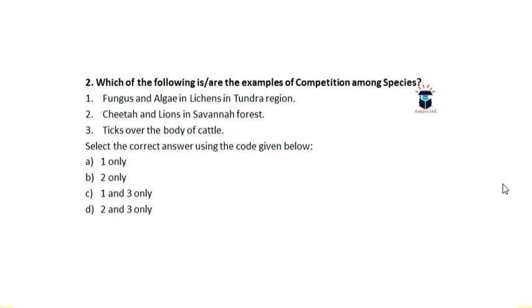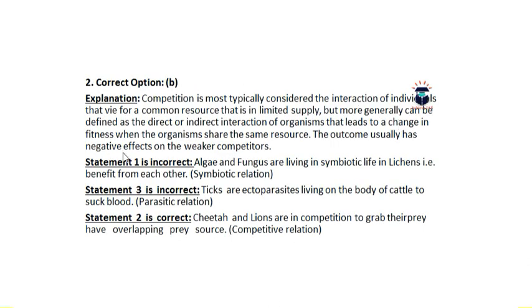The first statement is not correct because fungus and algae in lichens have a symbiotic relationship. The third option describes a parasitic relationship. Competition is the type of relationship in which two or more species compete with each other for common resources. Cheetah and lions in savannah forest is the correct example, so the answer is B — second only.